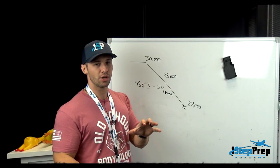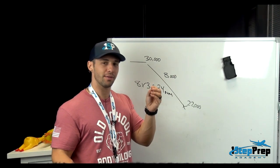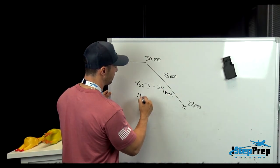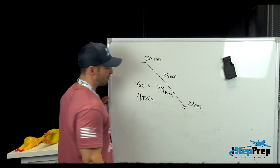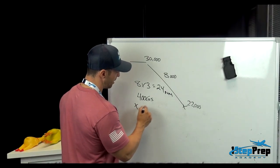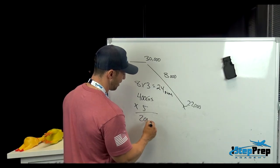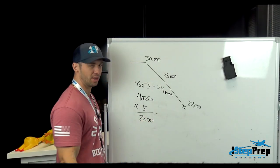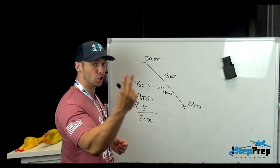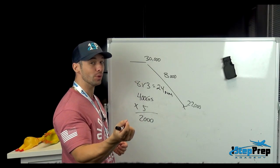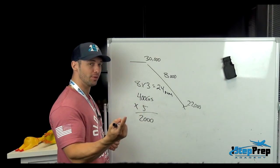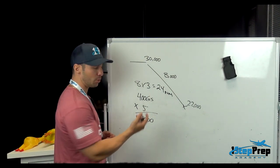Generally, ground speed is found in the top left corner of your navigation display. Let's say you have a ground speed of 400 knots. Now I need to take that number and multiply it by 5, which gives me 2,000 feet per minute. For those who don't like multiplication, you can get to the same number by dividing 400 by 2 to get 200, then add a zero — that's 2,000. Either way, you get the same result.